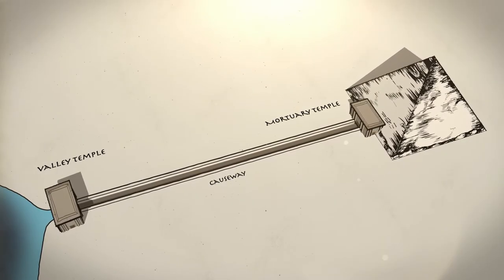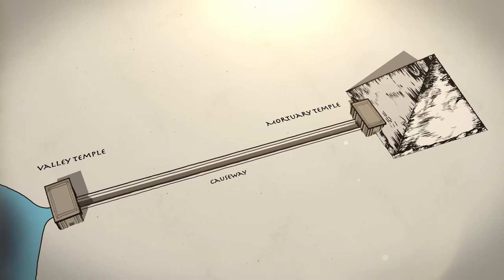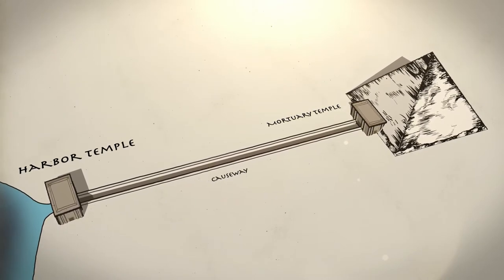This theory suggests changing the name Valley Temple to the more appropriate Harbor Temple, due to its proximity to the water's edge.